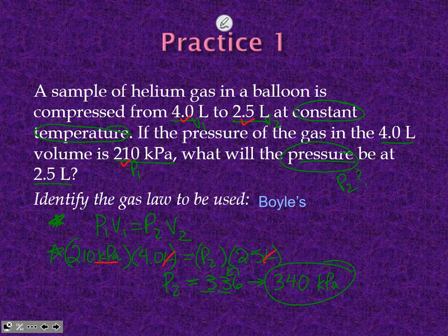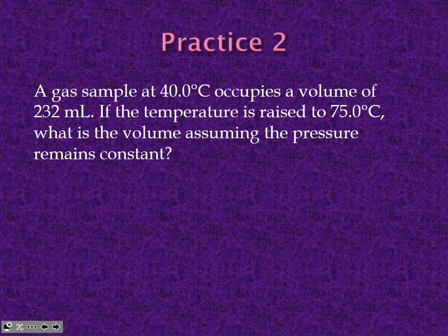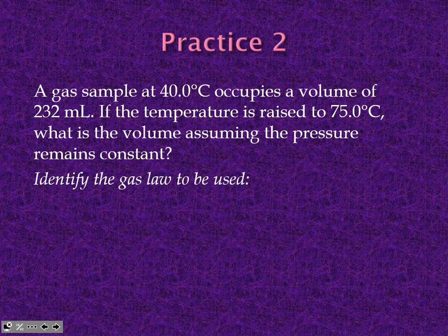What I want to see: write the formula, plug in the numbers, then get your answer — no other steps needed. Just show where you're setting it up. For practice problem 2: a gas sample at 40°C occupies a volume of 232 milliliters. If the temperature is raised to 75°C, what is the volume assuming pressure remains constant? This is Charles' Law — volume and temperature. You can use V₁T₂ = V₂T₁.